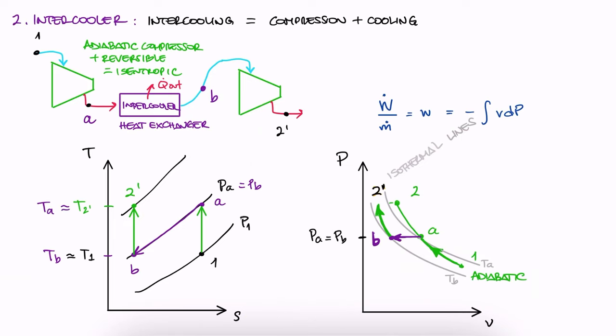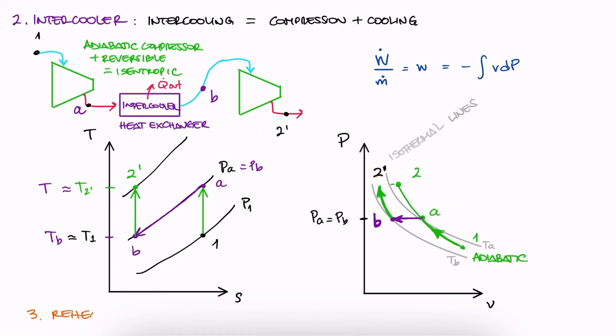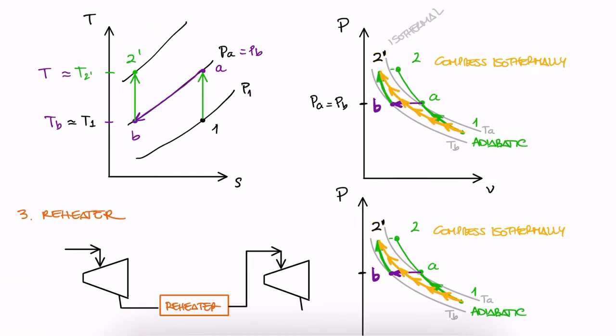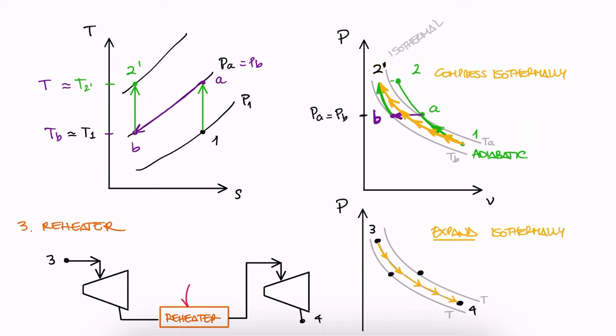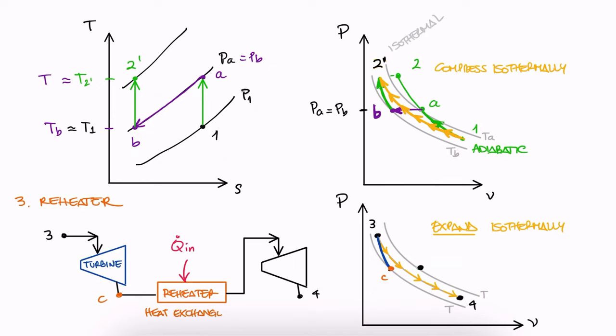With this, of course, you can probably already see that what a reheater would do, the last of today's three devices, is achieve the same effects of trying to compress at constant temperature, but at the turbine, by trying to expand at constant temperature by adding heat intermediately. Our schematic would show state 3 passing through a turbine to state C, a heat exchanger that we happen to call reheater from C to D, which adds heat at a constant pressure, and then we would see a second turbine from D to 4 prime.